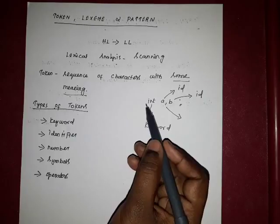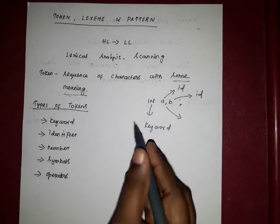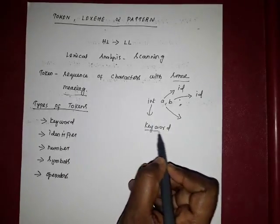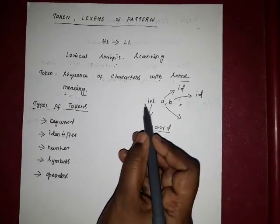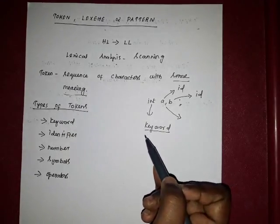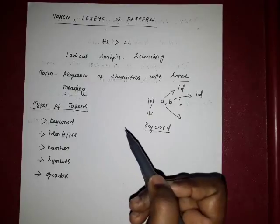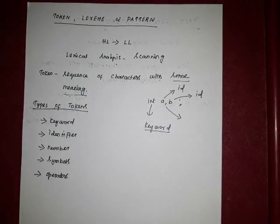Token means sequence of characters with some meaning. So 'integer' is a keyword — it is a meaningful word, so keyword is the token for integer. This is the main aim or task of lexical analysis. Now we are going to see what is a lexeme and what is a pattern.